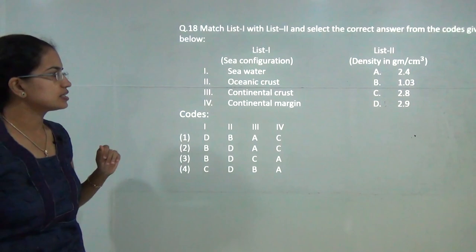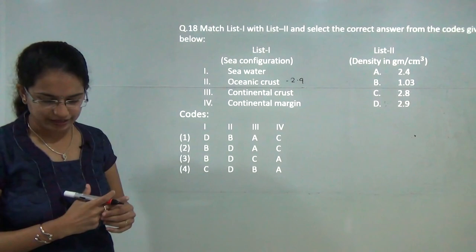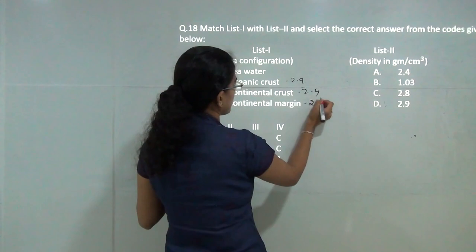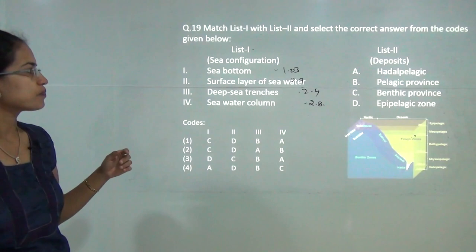Next question is an important question. You have the oceanic crust that is nearly 2.9, we tell it is nearly 3 or 2.9. Then you have the continental crust which is 2.4. The continental margin is close to oceanic crust so would be much denser, so it would be nearly 2.8 and the sea water would be 1.03. These are the correct matches for this question.